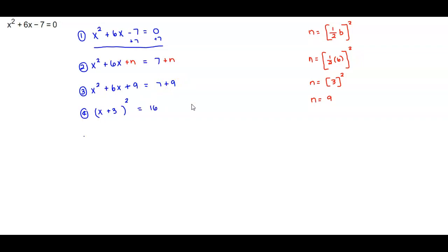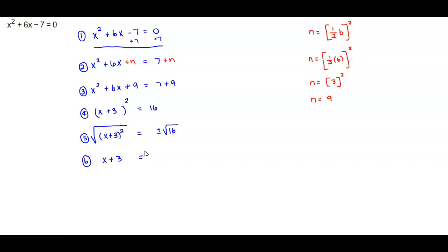Now we're going to use the square root property to solve. We take the square root of the left side — the square root of (x plus 3) squared — and the square root of the right side. Remember, when you take the square root of a constant it gives you a plus or minus. The square root of (x plus 3) squared is x plus 3, and that equals plus or minus the square root of 16, which is 4.